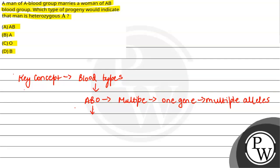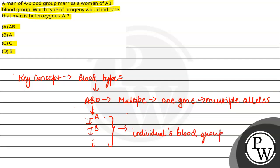Multiple alleles kya hote hain? Jab hamare paas ek hi gene present hai but uske multiple alleles present hote hain. Similarly in ABO blood group, hamare paas teen multiple alleles hote hain. In ke multiple alleles hain: IA which is antigen A, IB which is antigen B, and small i which is no antigen, therefore it is referred as O type. Ek blood group mein generally 2 alleles present hote hain, ya phir homozygous form mein ek hi allele double present hota hai.